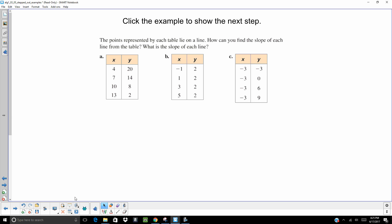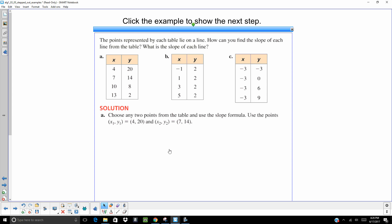All right. The points represented in each table lie on a line. That's an important piece of information. How can you find the slope of each line from the table? And what is it? What is the slope of each one? This sounds complicated, but it's really not a bad thing to do. What you're going to do is you're going to choose any 2 points.